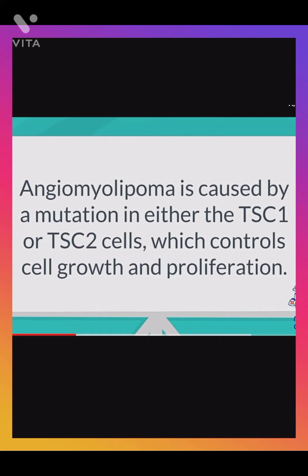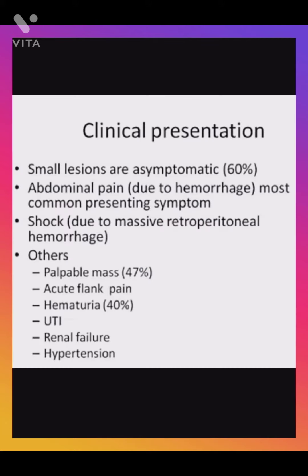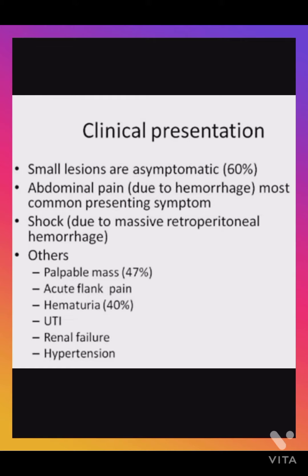Clinically, small angiomyolipoma lesions are asymptomatic — about 60% are asymptomatic and found incidentally. Symptomatic lesions cause abdominal pain due to hemorrhage. The most common presenting symptoms are abdominal pain and shock due to massive retroperitoneal hemorrhage. Other presentations include palpable masses, acute flank pain, renal failure, and hypertension.